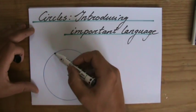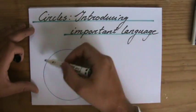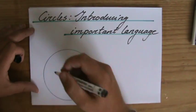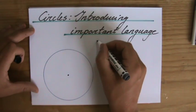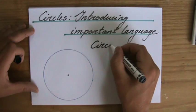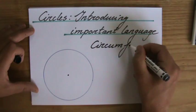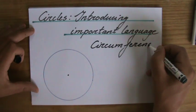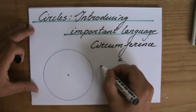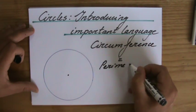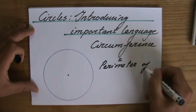But when we talk about the perimeter, for circles we don't talk about the perimeter, we talk about the circumference. So if you see the word circumference, you are actually talking about the perimeter of a circle. That's the perimeter. Perimeter of a circle.